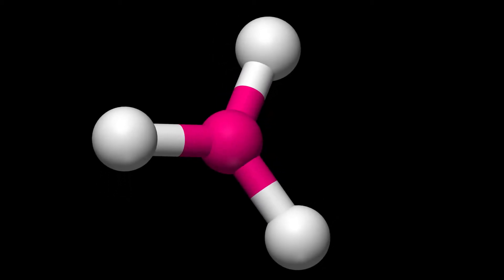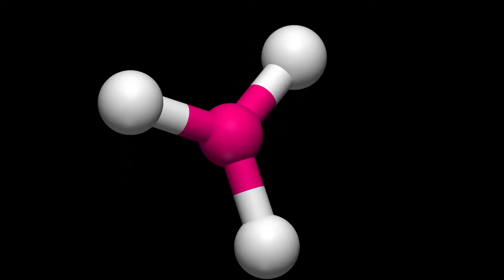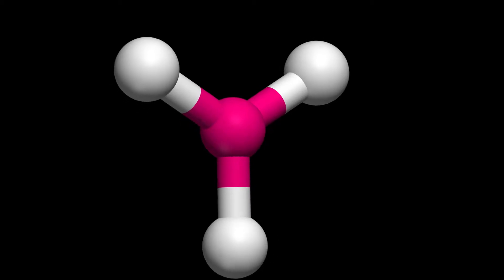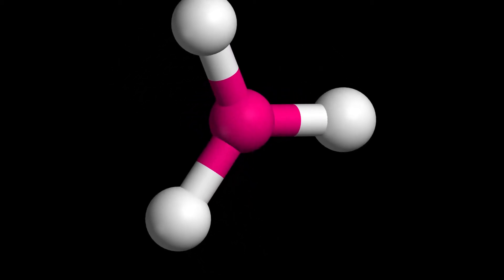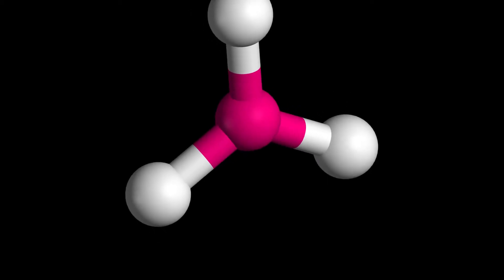Tennessine is a super-heavy artificial chemical element with symbol Ts and atomic number 117. It is the second-heaviest known element and the penultimate element of the seventh period of the periodic table.